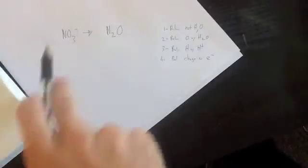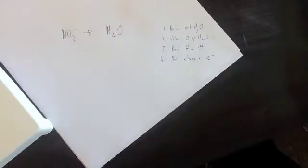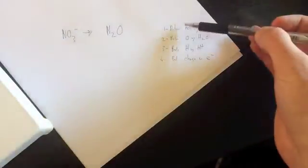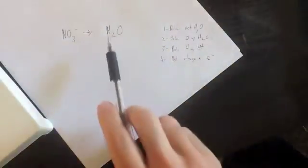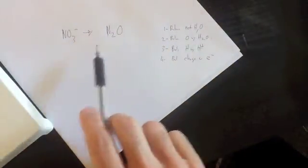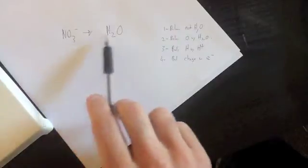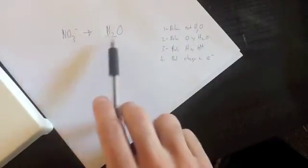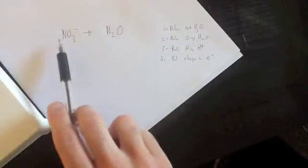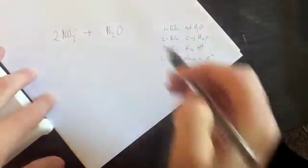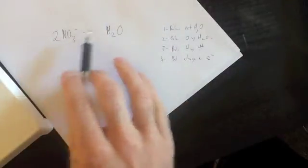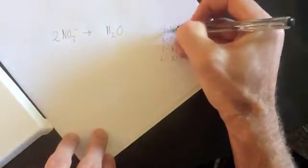So here's our equation. We need to balance this. The way we're going to do that is, first, balance everything that's not H and O. We've got O here, we don't want to balance that because it is O, so we're going to balance our nitrogen here. We've got two on this side, but only one on this side. To balance that, we're going to put a two at the front there, and therefore we have balanced nitrogen. So this part is done.